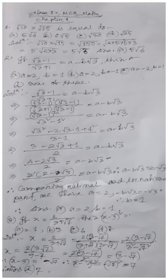Squaring both sides: (x − 3)² = (−√7)² = 7, since the square of a negative number is positive and √7 squared is 7. So (x − 3)² = 7, which is option (d).